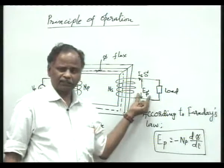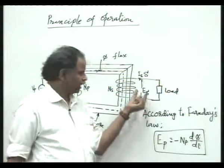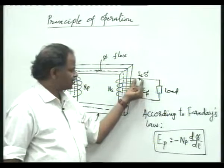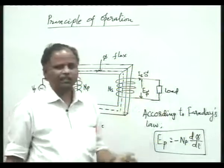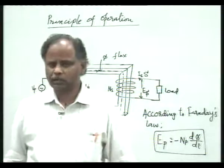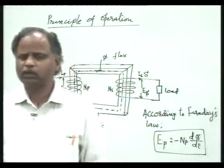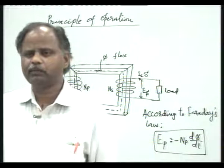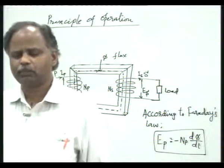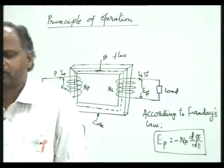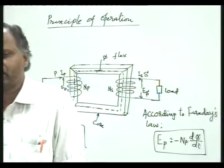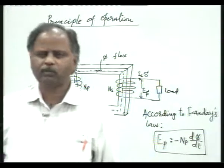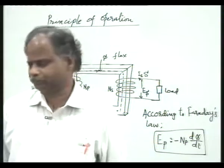We call it induced EMF — it is not directly produced, it is induced EMF. And this induced EMF will produce a current IS if the secondary winding is connected to a load. If it is not connected to a load, we cannot have current here. The secondary EMF will be existing but current will not be there. Therefore, the secondary winding has to be connected to a load in order to see current flow in the secondary winding.